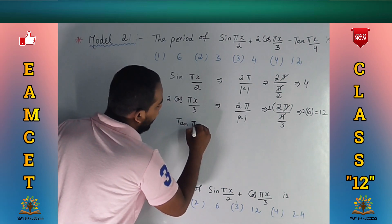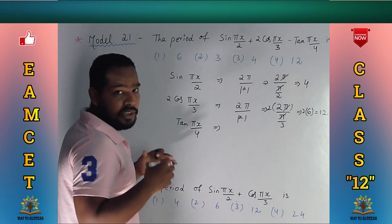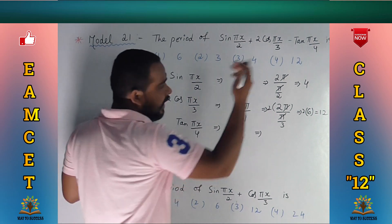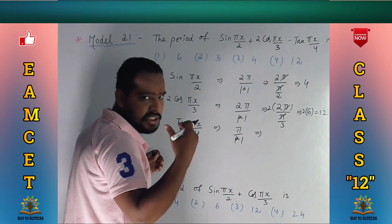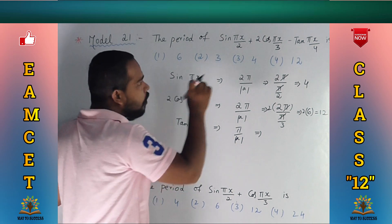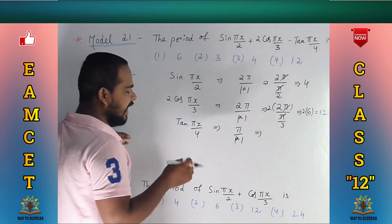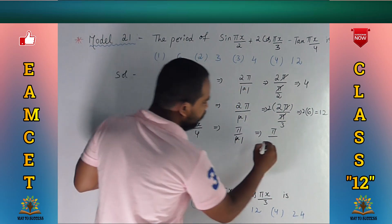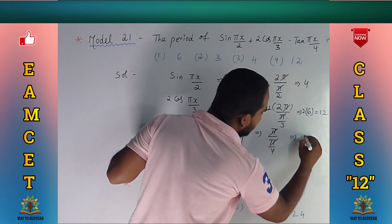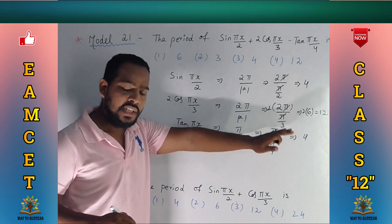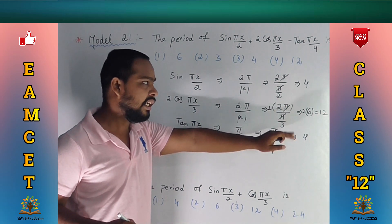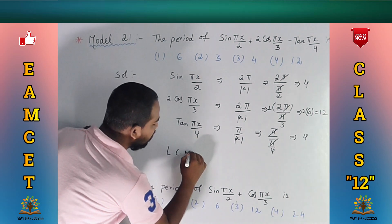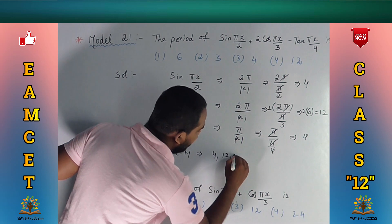Now coming to tan(πx/4). For tan and cot, the period formula is π divided by the modulus of a. Here a = π/4, so the period is π/(π/4) = 4. Now to find the overall period, we take the LCM of 4, 12, and 4. LCM of 4, 12, 4: 4 into 3 equals 12.